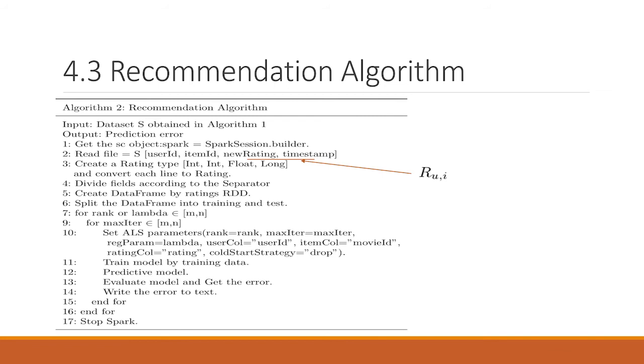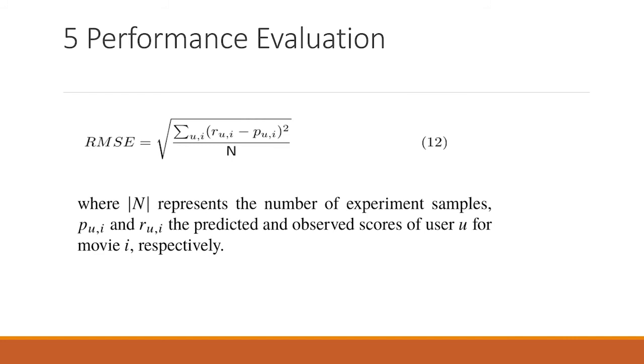Let's see the performance evaluation. We applied the metric RMSE in equation 12 to evaluate our model, where N represents the number of experiment samples. P and R represent the predicted and observed scores of user U for movie I, respectively.